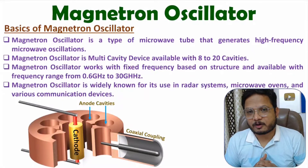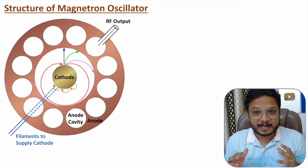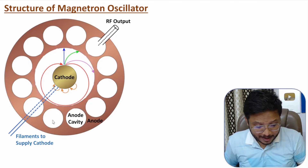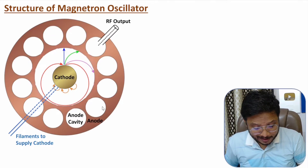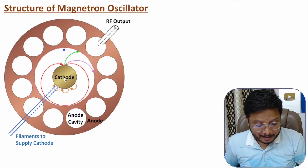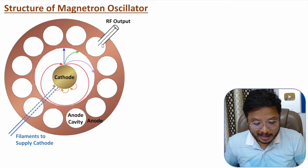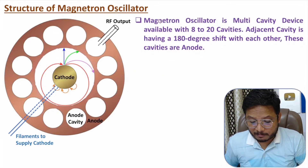The magnetron oscillator is a multi-cavity device, with the cavities located inside the anode. In the structure shown here, there are 12 cavities in total inside the anode. At the center we have the cathode — this is a top view — and that cathode is connected with filaments to supply DC, which generates electrons. RF output is taken from the cavities. Different types of magnetron oscillators have 8 to 20 cavities.